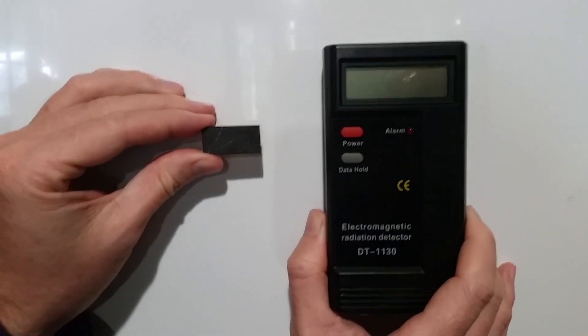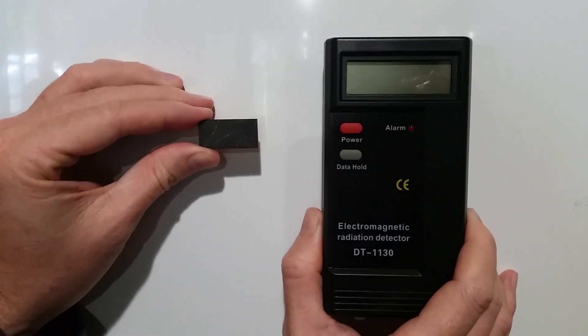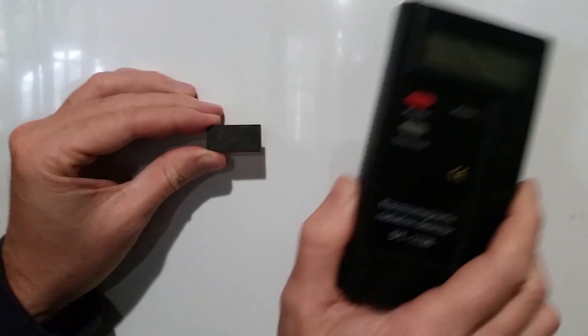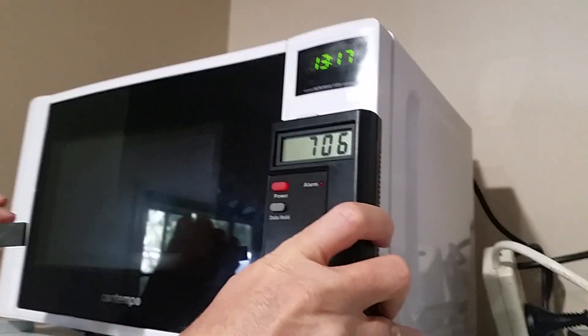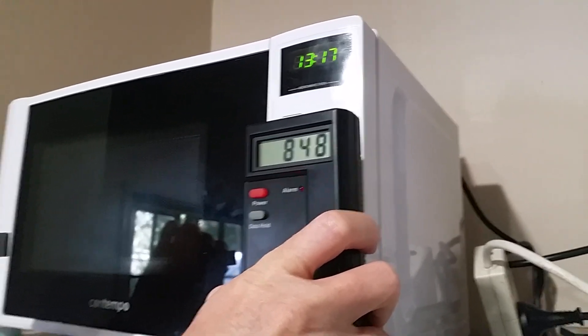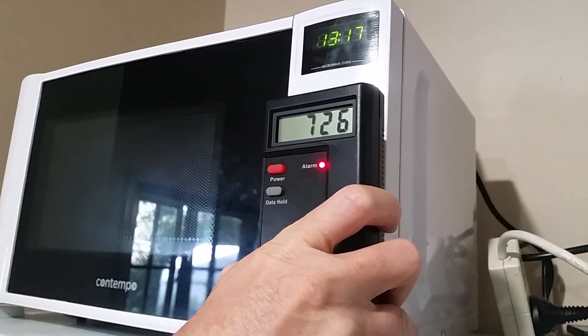Now we're going to do a test on it, and the easiest way to do it is just on a microwave. If we turn the device on and then go closer to the microwave, as you can see it goes up and it's beeping because the alarm is going off - it's off the chart.